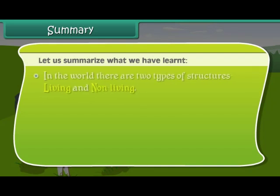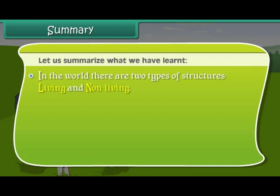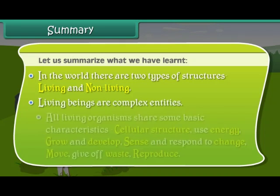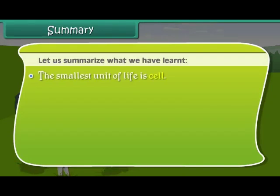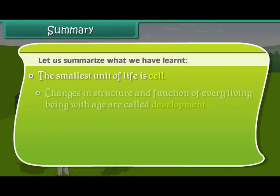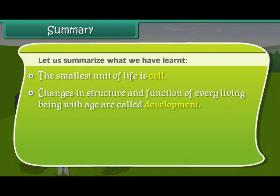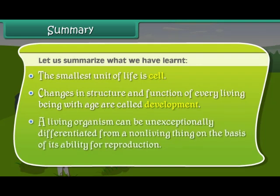In summary: in the world there are two types of structures — living and non-living. Living beings are complex entities. All living organisms share basic characteristics: cellular structure, use of energy, growth and development, sensing and responding to change, movement, giving off waste, and reproduction. The smallest unit of life is the cell. Changes in structure and function of every living being with age are called development. A living organism can be unequivocally differentiated from a non-living thing on the basis of its ability for reproduction.